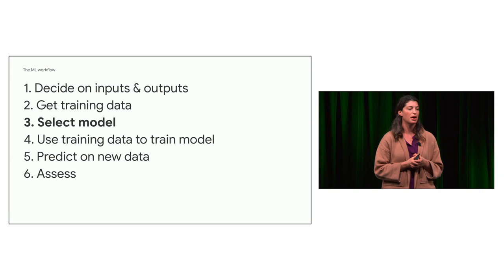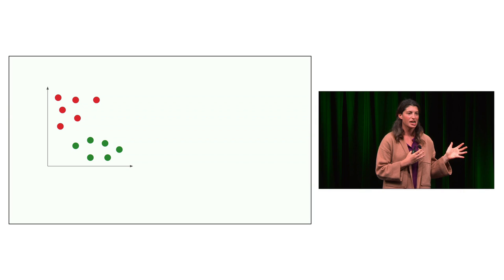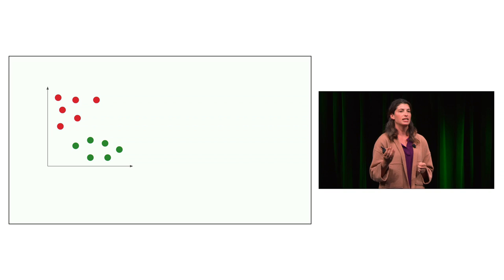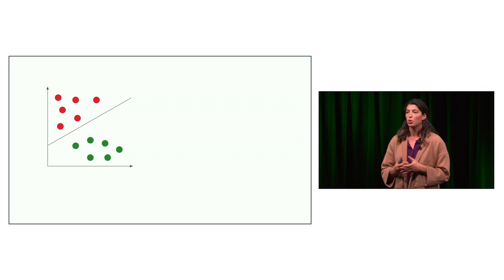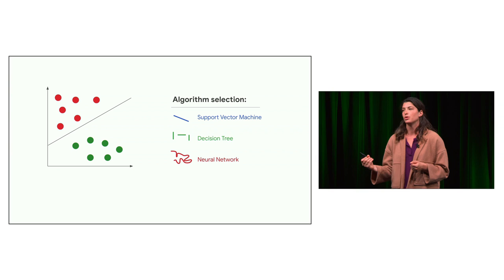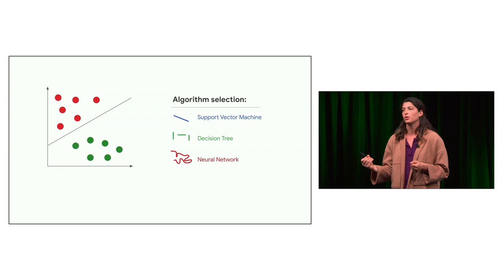Now we get to select a model. For ease of illustration with just two classes — red for urban, green for vegetation — you might imagine drawing a simple line to separate them. That's actually an ML algorithm called a support vector machine, and deciding where to draw that line is the machine learning algorithm. This highlights the importance of getting good training data, because where the line is drawn depends on the training data. Different algorithms all segment your data so that when new data comes in, the model tells you what it thinks the output is.